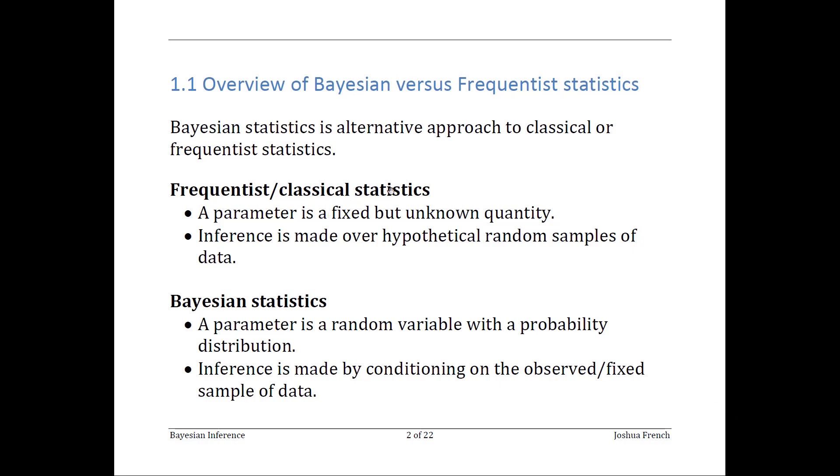In frequentist or classical statistics, we assume that our parameters in the model are fixed but unknown, and we consider the properties of estimators of these parameters when we take repeated independent samples from a population of interest. We keep taking samples from our population over and over again and look at properties of our estimators in relationship to those samples.